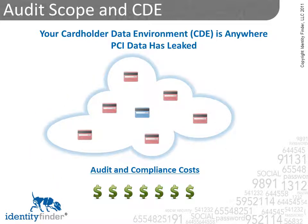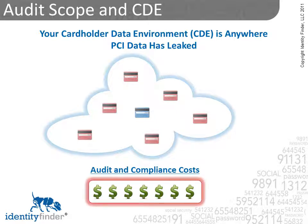The more places PCI data is copied, the larger your cardholder data environment becomes. And with each email, Excel spreadsheet, or instant message, the number of devices in your cardholder data environment grows, and your audit and compliance costs go through the roof. So the single most effective thing you can do to reduce audit and compliance costs is to delete all of those copies and shrink the size of your cardholder data environment.